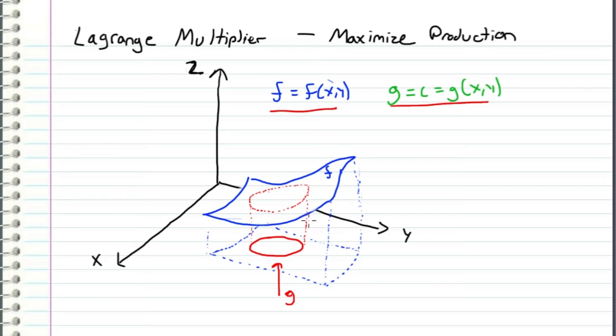And the key thing here is recognizing that the gradient of g, which in this case are the normal vectors that point outside radially from the surface, these lines which we will call the gradient of g, must be parallel to the gradient of f which points in the direction of the steepest slope. So the gradient of g is parallel to the gradient of f.